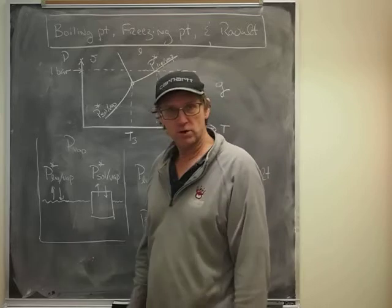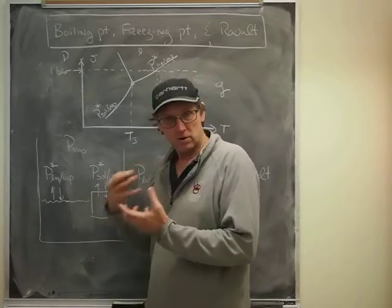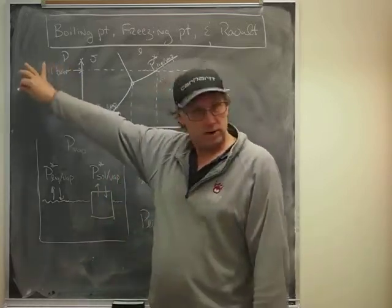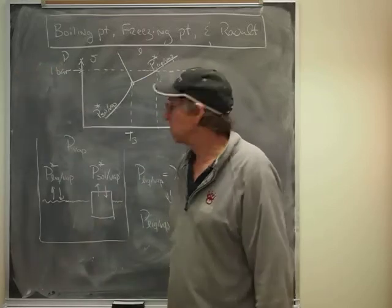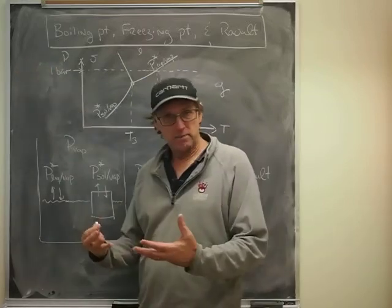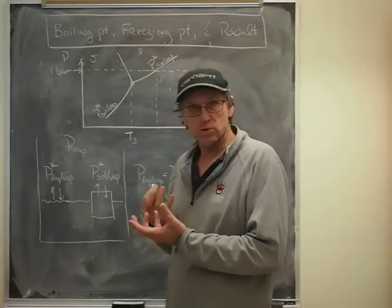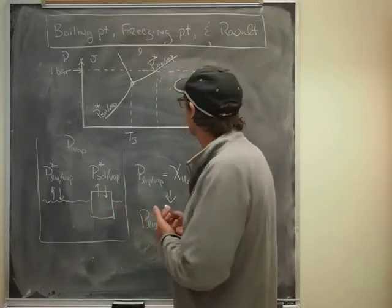We can tell where the boiling temperature of a liquid is by just looking to see where the vapor pressure, the equilibrium vapor pressure of a body of water, equals about atmospheric pressure, or I'll say one bar. When that happens, then what we observe is that the liquid begins to boil.